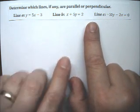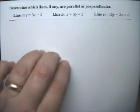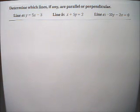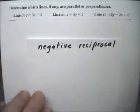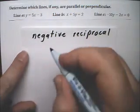Perpendicular lines have slopes that are negative reciprocals. Negative reciprocal, it's kind of a tricky concept.